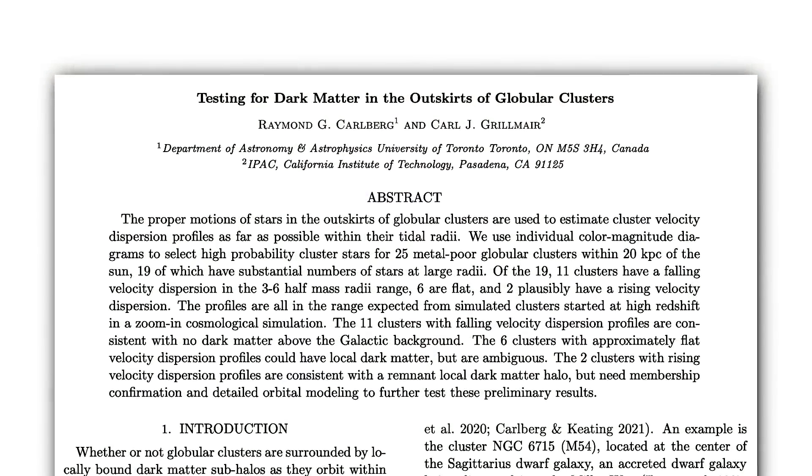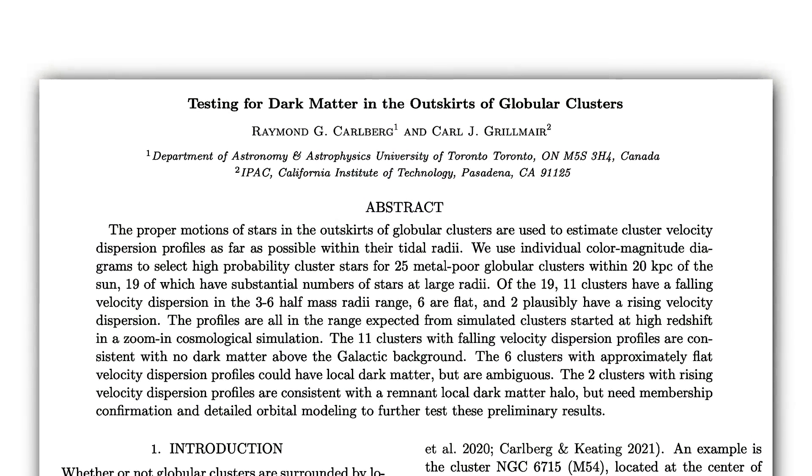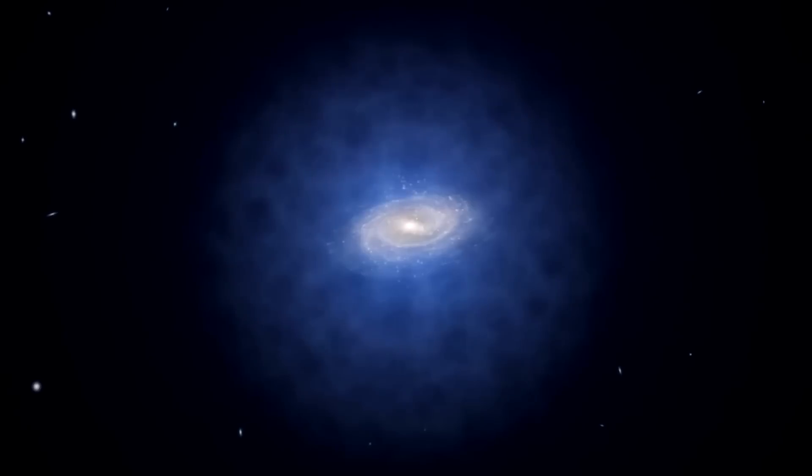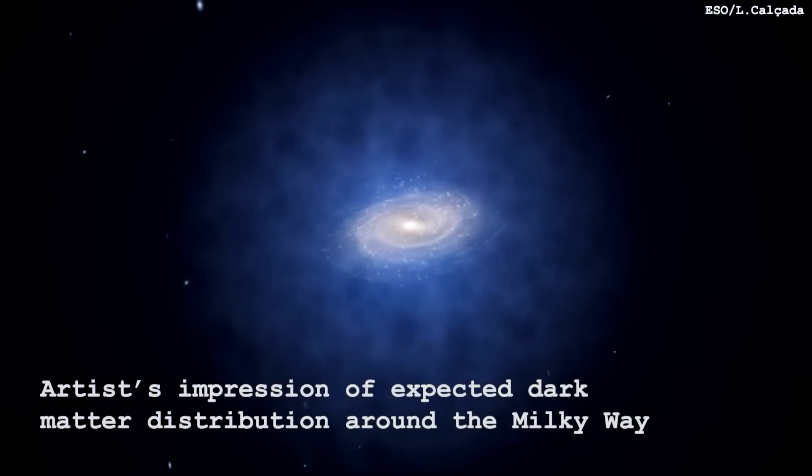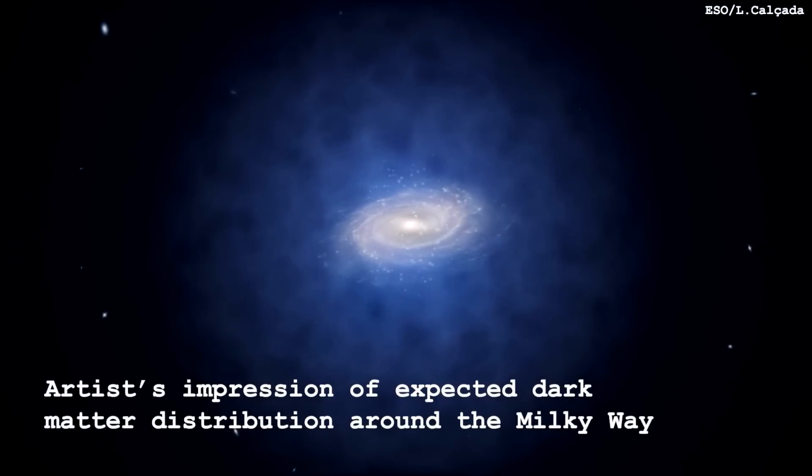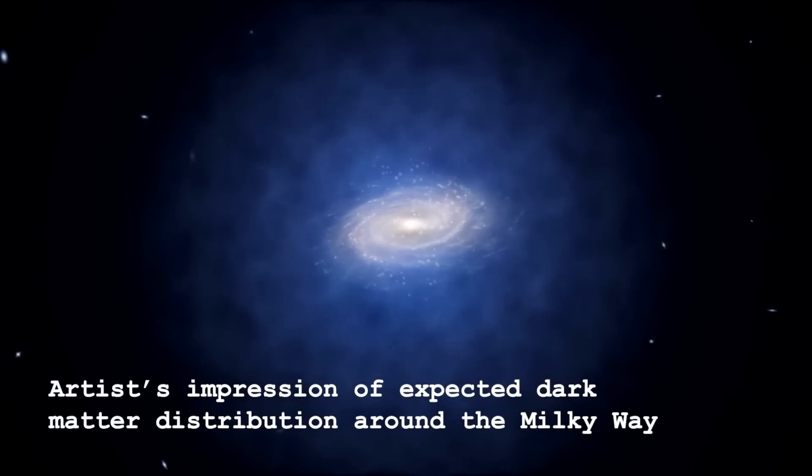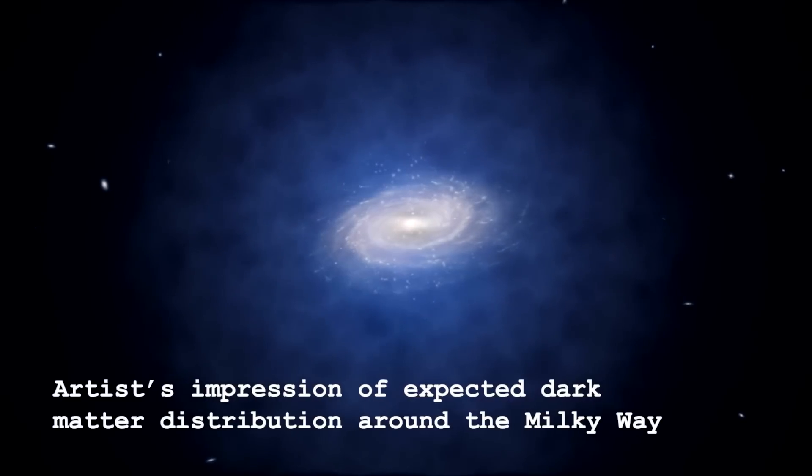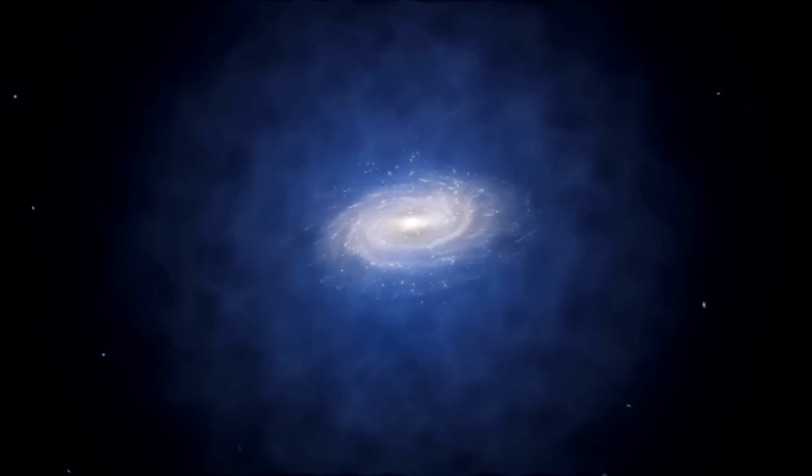So I found this paper called Testing for Dark Matter in the Outskirts of Globular Clusters. Recall that dark matter is this elusive substance that pervades all of the universe. It's everywhere, but it doesn't emit any light, so we can't really detect it. One of our best evidence and early measurements for dark matter is through galaxy rotation curves.